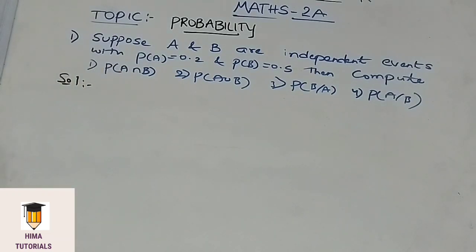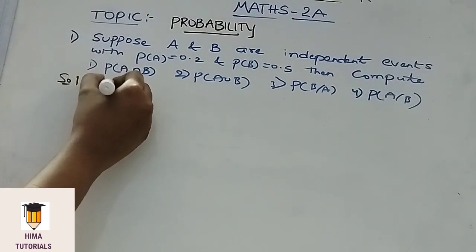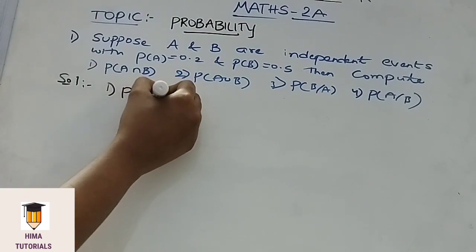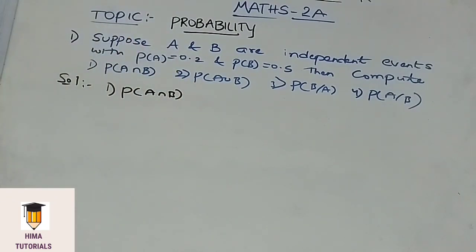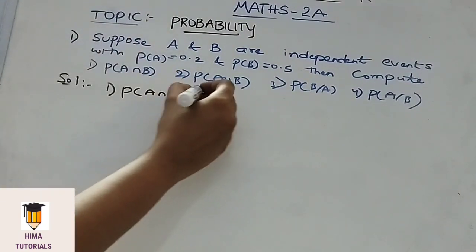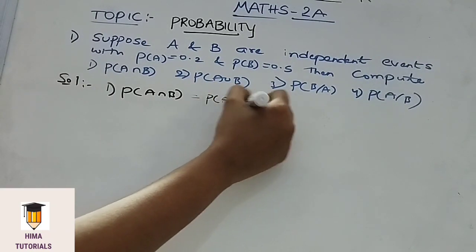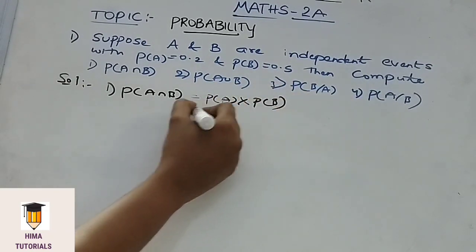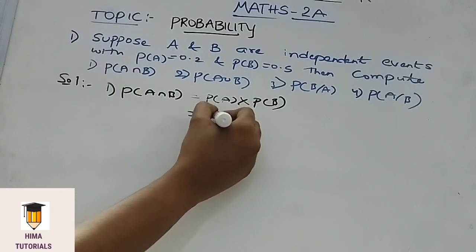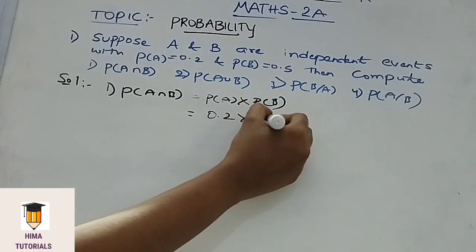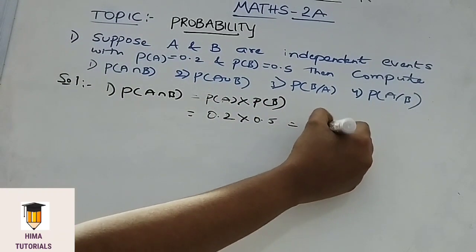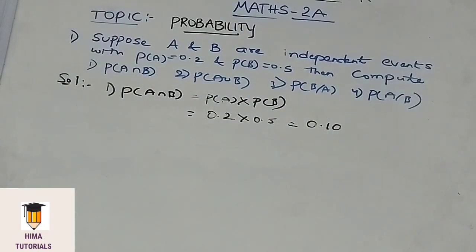Coming to the solution. We need to find P of A intersection B. If A and B are independent events, then P of A intersection B is given by P of A into P of B. P of A is 0.2 and P of B is 0.5. That means P of A intersection B is 0.10.